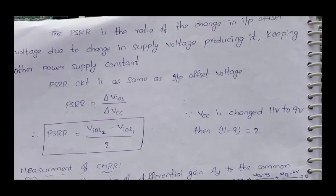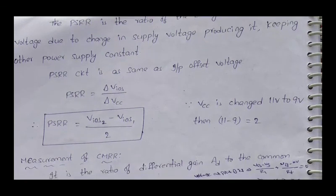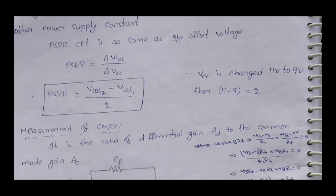Next, PSRR — Power Supply Rejection Ratio. PSRR is the ratio of the change in input offset voltage to the change in supply voltage producing it, keeping the other power supply constant. The formula is PSRR equals ΔVios divided by ΔVcc. For example, if Vcc is changed from 11V to 9V, then ΔVcc equals 2V.